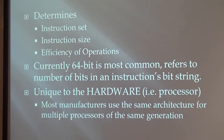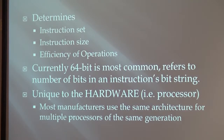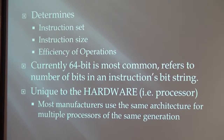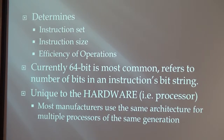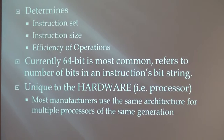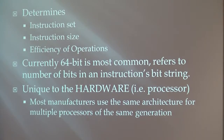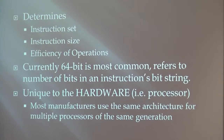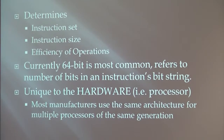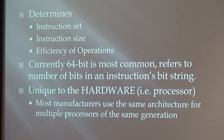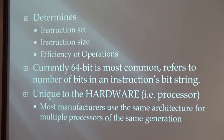The architecture determines the instruction set, the size of each instruction, and how efficient the operations are. Currently the most common architecture size is 64-bit, which refers to the number of bits in each instruction bit string. The architecture is unique to the hardware, specifically the processor, although a manufacturer will generally use the same architecture for multiple processors across the same generation. It might also share its architecture with the previous and next generation, because making architecture is really complicated and difficult, and usually new architecture isn't worth the expense until you reach a major upgrade from the previous hardware.